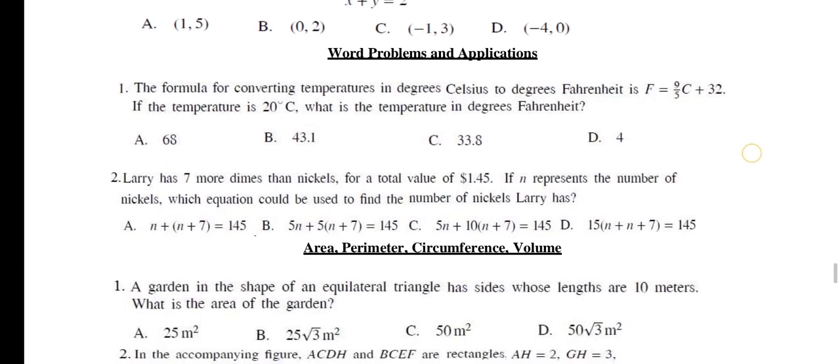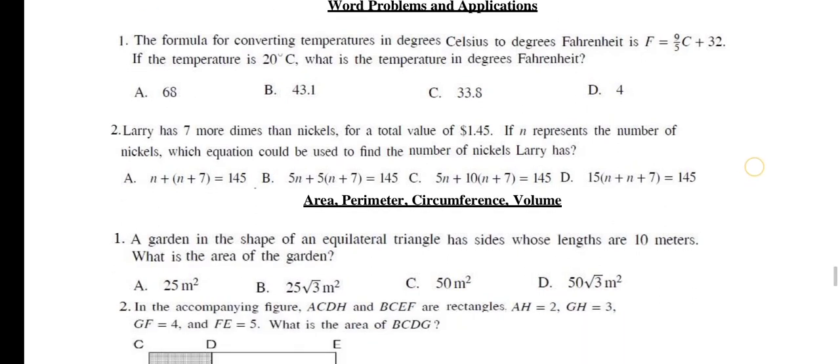Word problems and applications. The formula for converting temperatures in degrees Celsius to degrees Fahrenheit is Fahrenheit is equal to 9 upon 5 into C plus 32. If the temperature is 20 Celsius, what is the temperature in degree Fahrenheit? The right option is A, 68. Question number 2: Larry has 7 more dimes than nickels for a total value of $1.49. If N represents the nickels, which equation could be used to find the number of nickels Larry has? The right option is C: 5N plus 10 into N plus 7 is equal to 145.